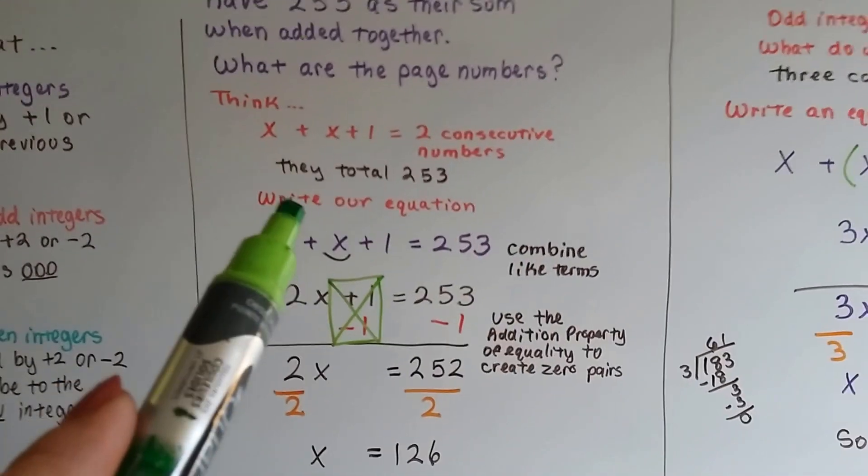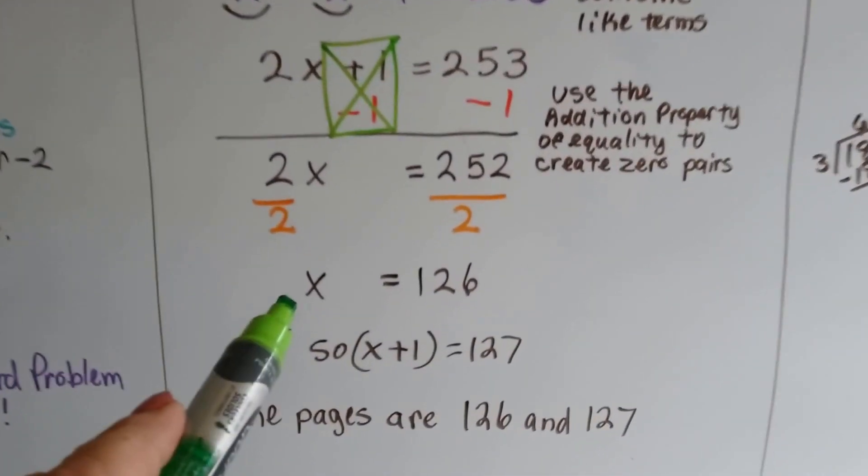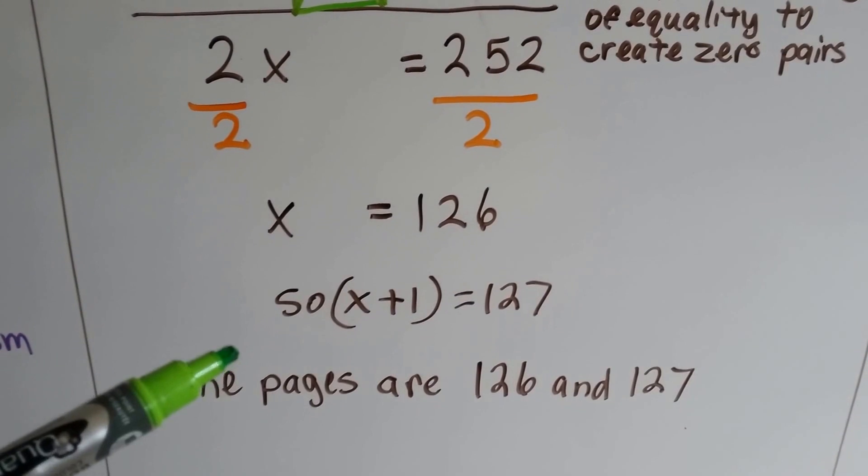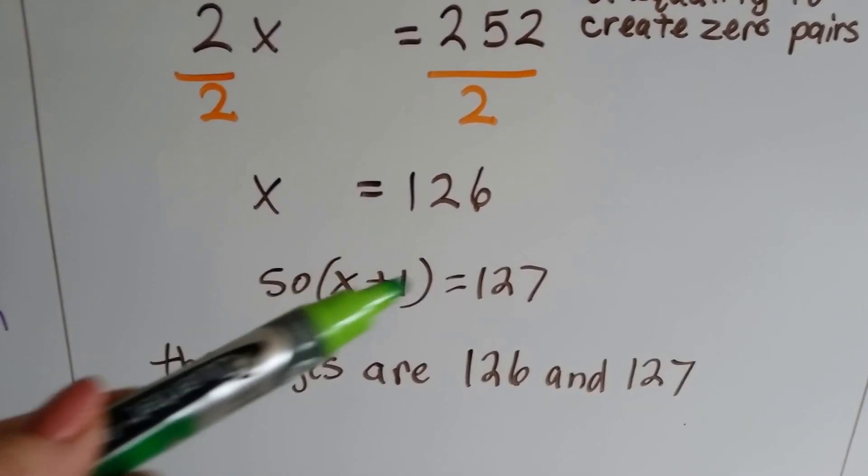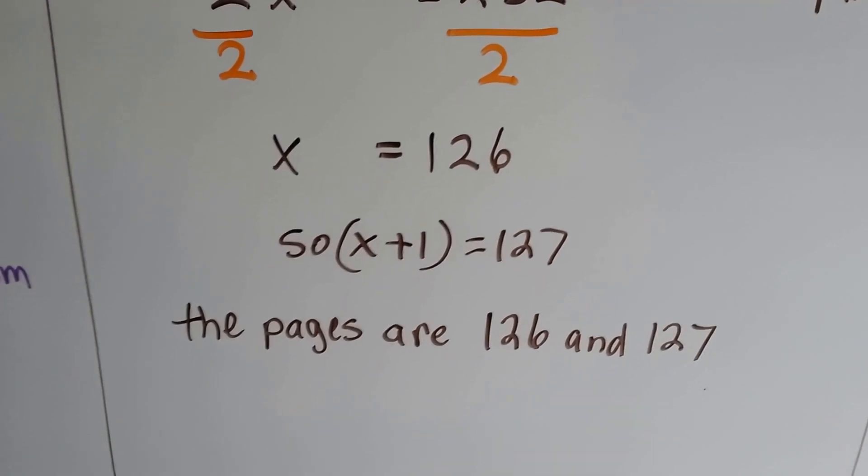Because it said that there were two pages, right? And they totaled 253. So we know one page, x, is 126. Well, we also know the next page is x plus 1. So that's 126 plus 1. So we know the two pages are 126 and 127.